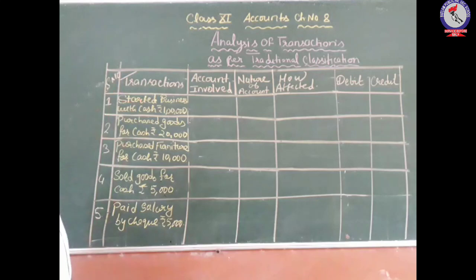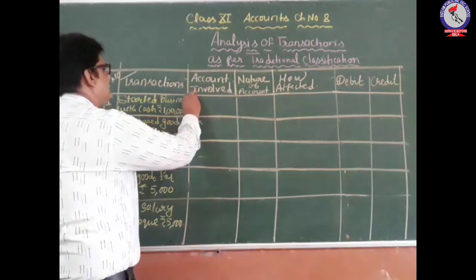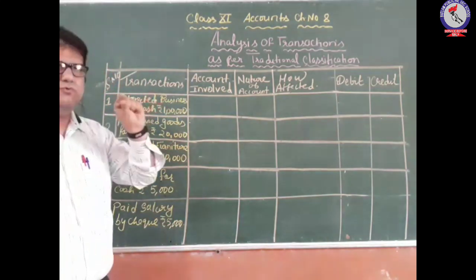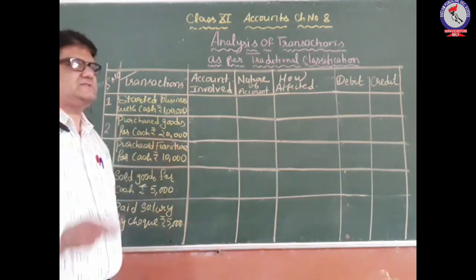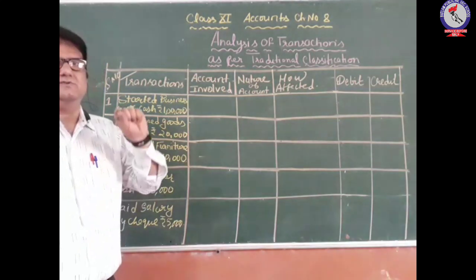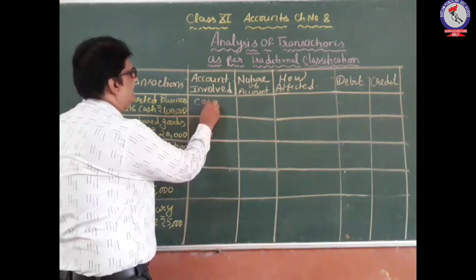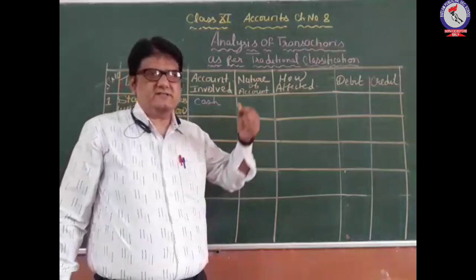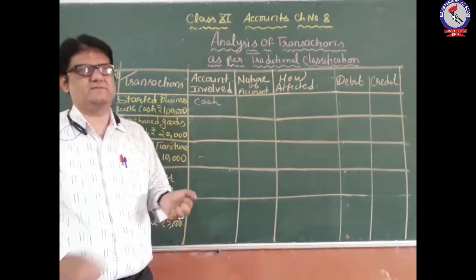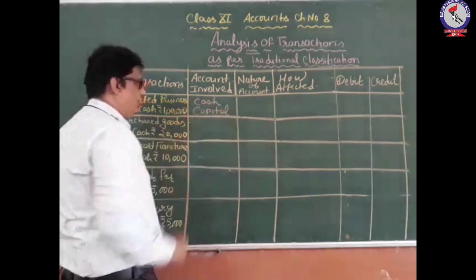The first event recorded is: started business with cash. So firstly, what are the two accounts involved in this transaction? When we are starting the business with cash, cash is coming into the business, so one account is the cash account. The second account: this cash is introduced by the proprietor of the business, and when money is introduced by the proprietor, that becomes the capital. So the two accounts involved are cash and capital.